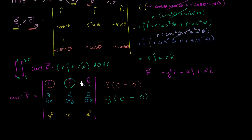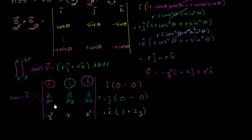And then finally we have our k component. Plus k. We're going to have the partial of x with respect to x — that actually gives us a value, that's just going to be 1. Minus the partial of negative y squared with respect to y, which is negative 2y, and we're subtracting that, so it's going to be plus 2y. So curl of f simplifies to just 1 plus 2y times k, or k times 1 plus 2y.